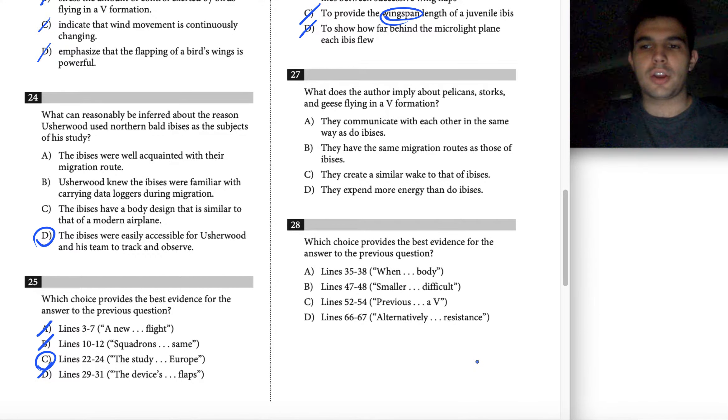All right, let's take a look at questions 27 and 28 for passage 3. Again, I'm going to pair these questions together like I did with 24 and 25 because we have this same format of a general question in 27 and an evidence question in 28.